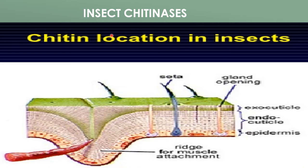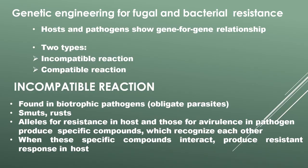Chitinase: chitin is an insoluble structural polysaccharide found in the exoskeleton and gut lining of insects, believed to protect insects against water loss and abrasive agents. Larvae feeding on transgenic plants exhibit severe growth aberrations and die prematurely. Tryptophan decarboxylase from periwinkle was expressed in tobacco, inducing synthesis of tryptamine and tryptamine-based alkaloids; pupal emergence of the whitefly decreased as a result of feeding on such plants.